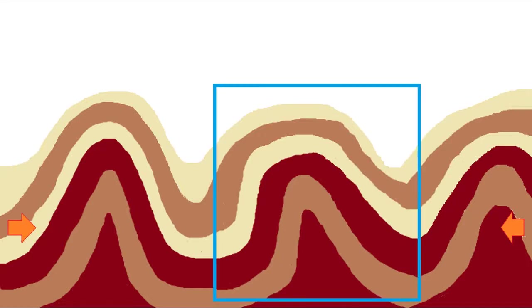Next, we have asymmetrical folds. These lean to one side—we might have had greater pressure from one side, making them asymmetrical.